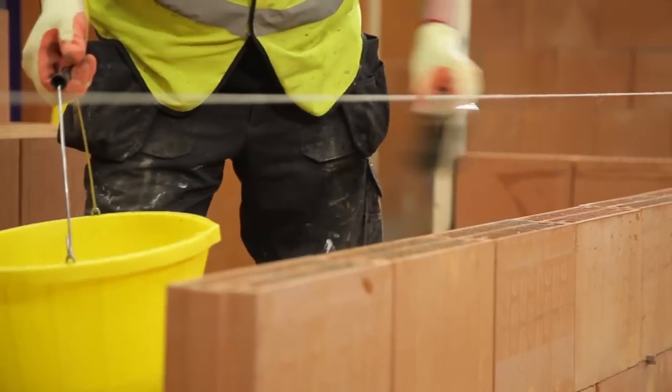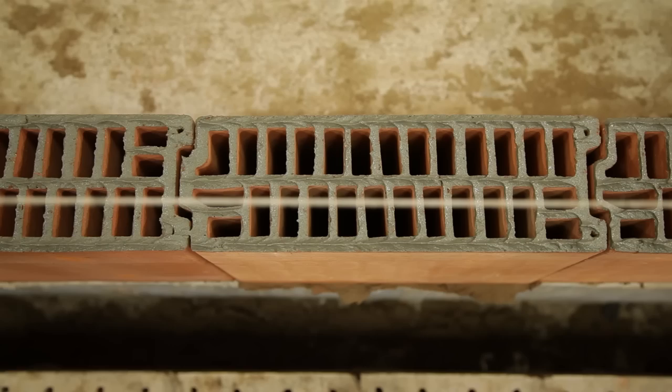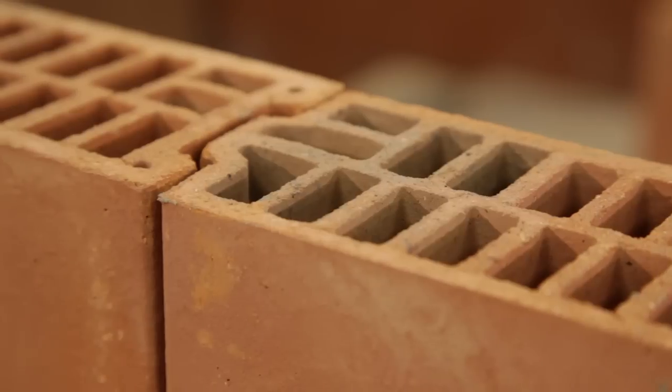Porotherm blocks are precisely engineered allowing a one millimeter bed joint. The interlocking design rules out the need for mortar in the vertical joint.